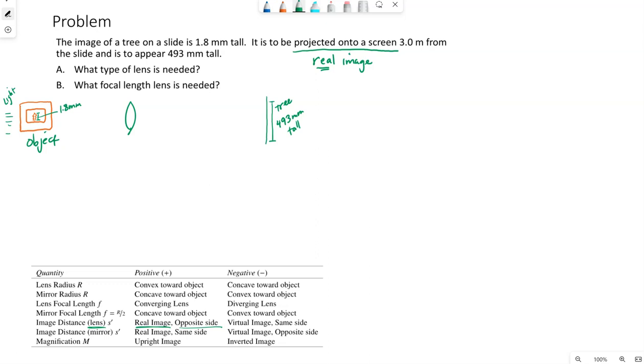This 3 meters, so it's to be projected onto a screen 3 meters from the slide. What that tells me is the distance from my slide, which would be oriented, we would only see the side of it, it would be oriented differently than I drew it. But they're telling us the slide and the screen are 3 meters apart.